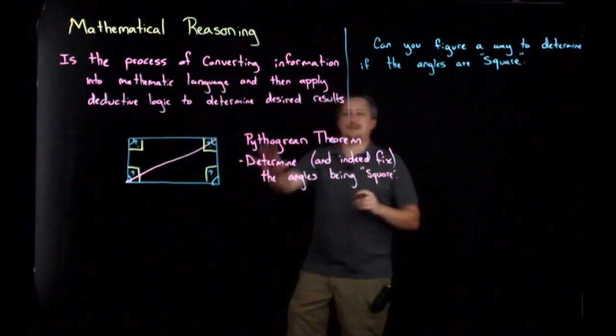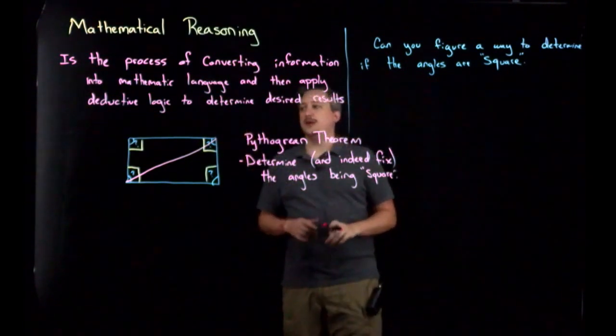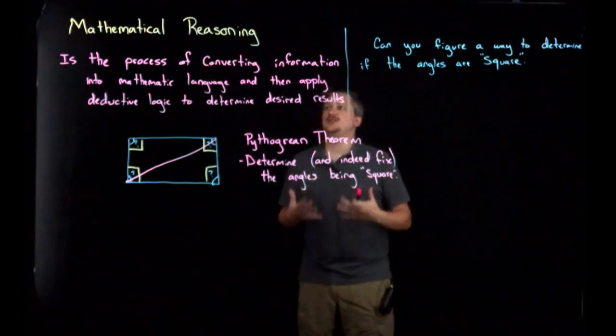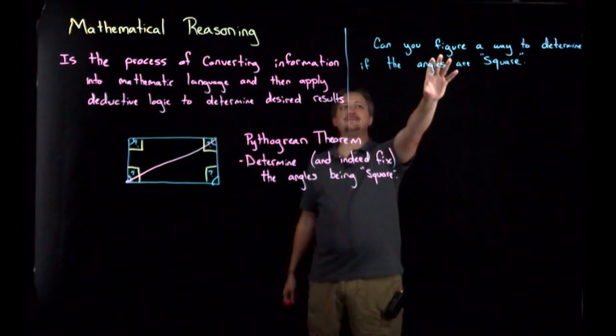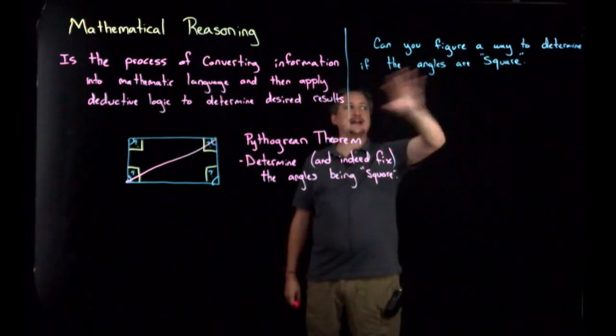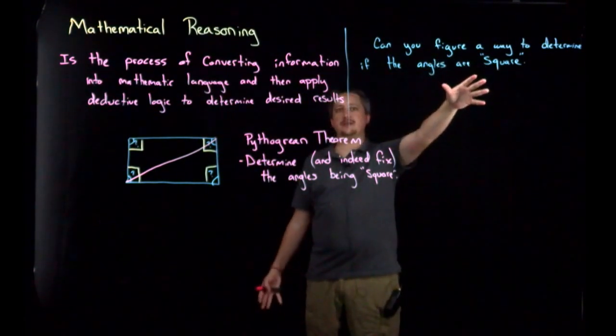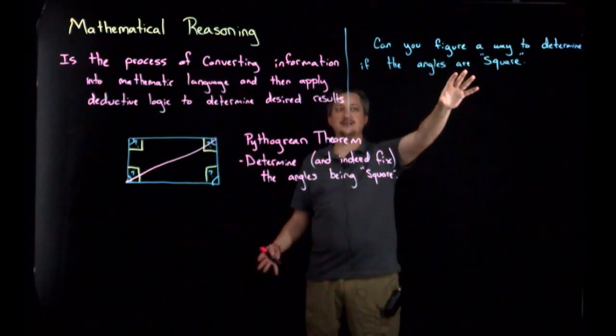So, as mentioned, I'm not going to go into exactly how I did that in this video. That'll be the next one. But the point is that the process that I used was: she came, she just gave me this, right? She said, "Can you figure out a way to determine if the angles on the base layer of my kiln are square?"